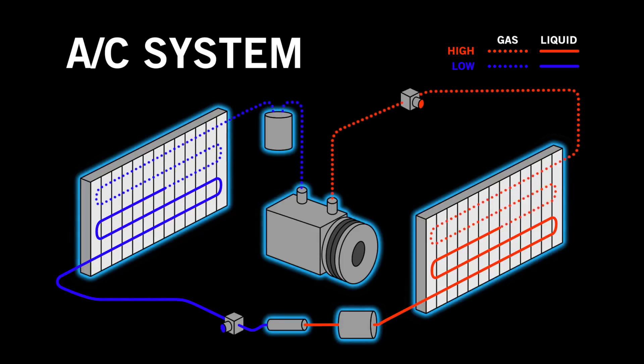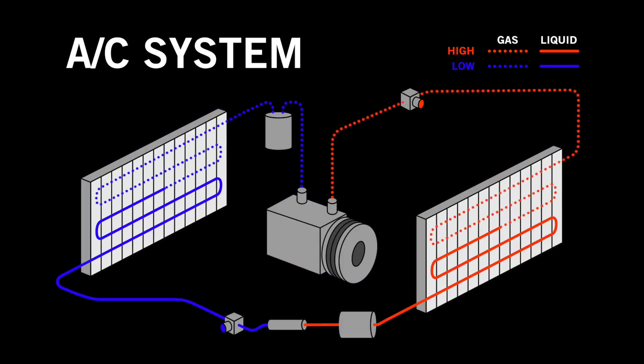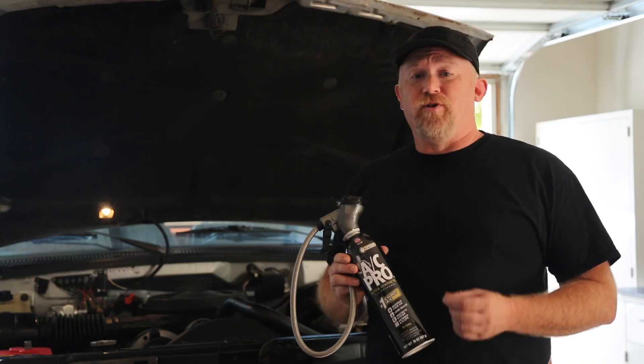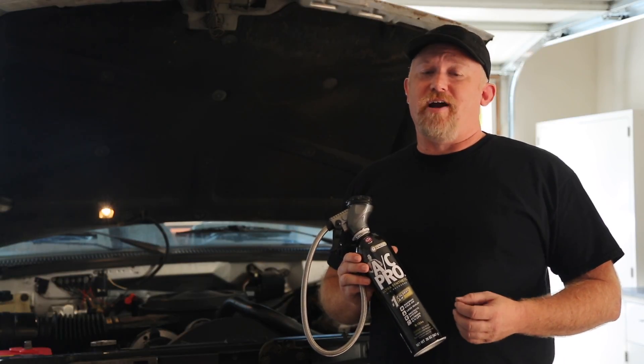Each of these parts is connected by tubing or hoses to form a closed loop system. Through that loop runs refrigerant, which really does the work of cooling down the air.